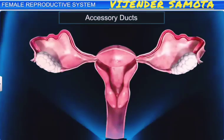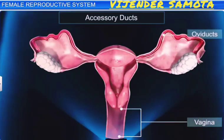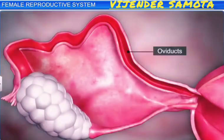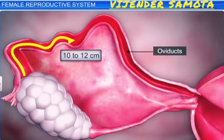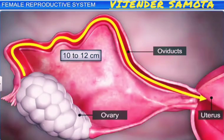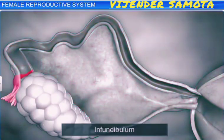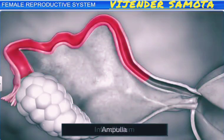The accessory ducts of the female reproductive system are the vagina, oviducts, and the uterus. The pair of oviducts, or fallopian tubes, is about 10 to 12 centimeters long, and extends from the periphery of each ovary to the uterus. Each oviduct is differentiated into three parts, namely the infundibulum, ampulla, and isthmus.